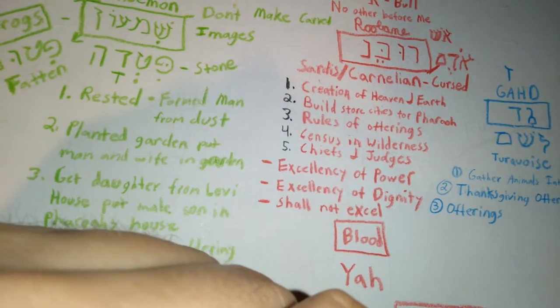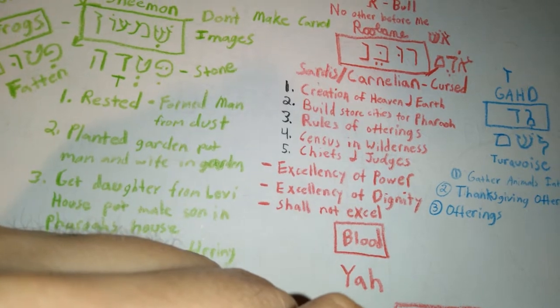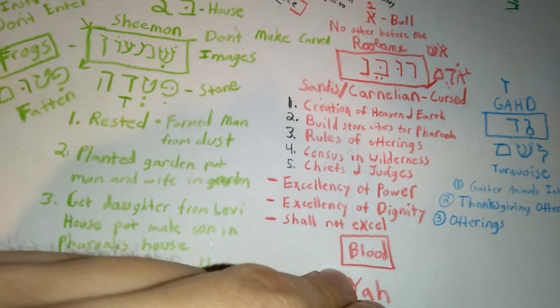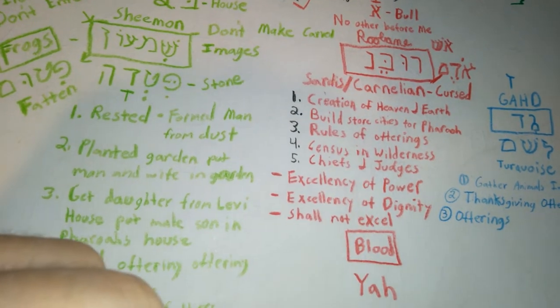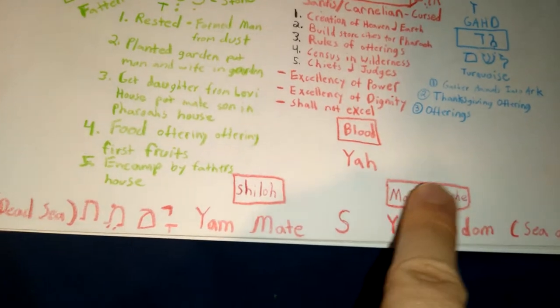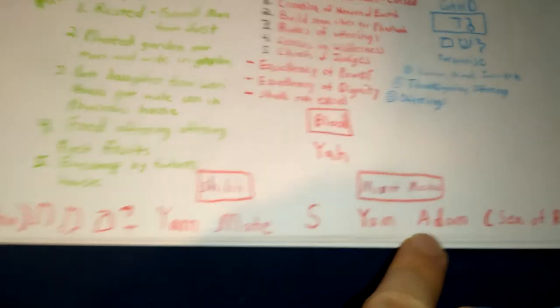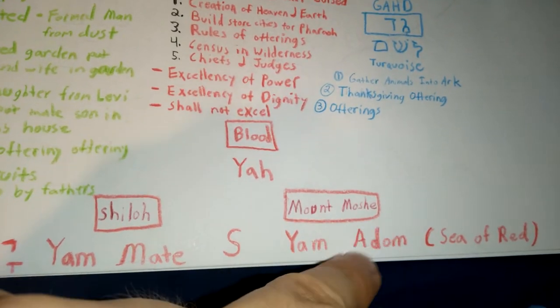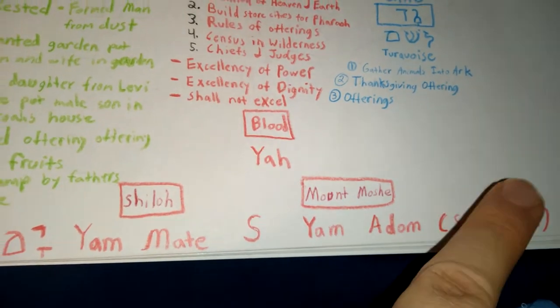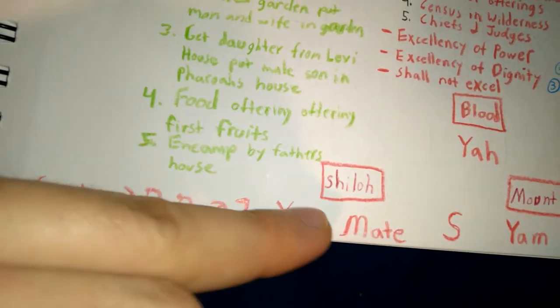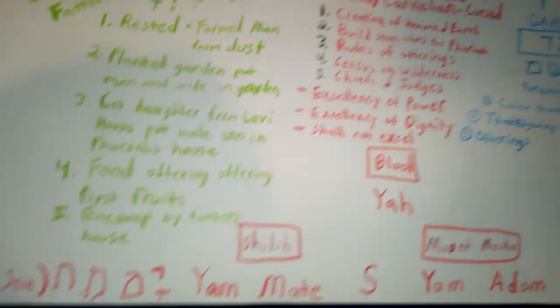Part of the first plague on a city will be blood. And obviously in the south at Mount Moshe was the Sea of Yom Adam or Sea of Red. At Shiloh, it was the Yom Mate, the Dead Sea to the south.